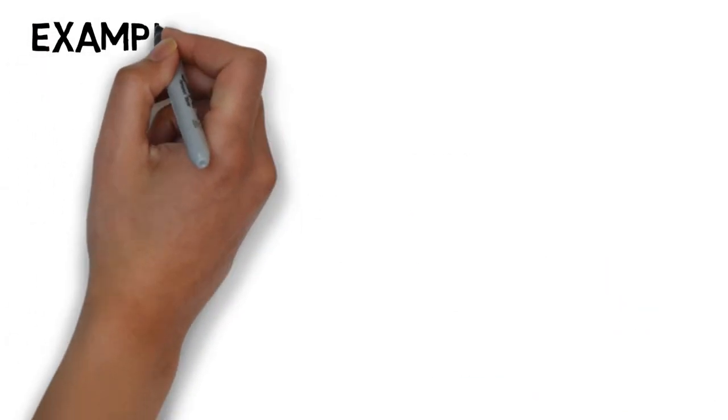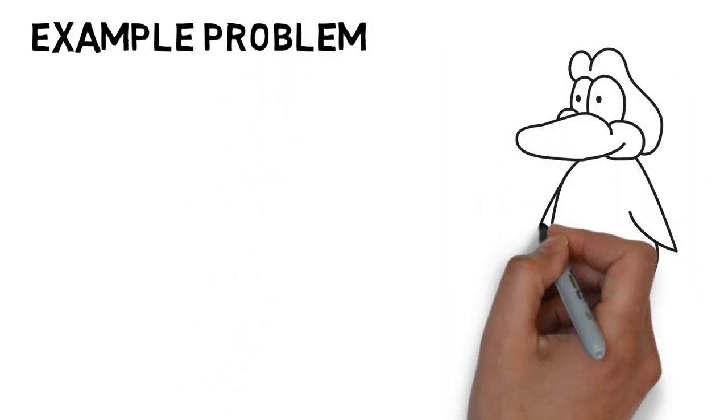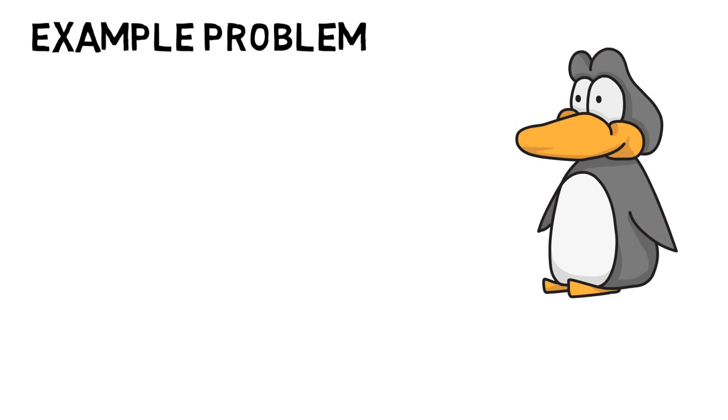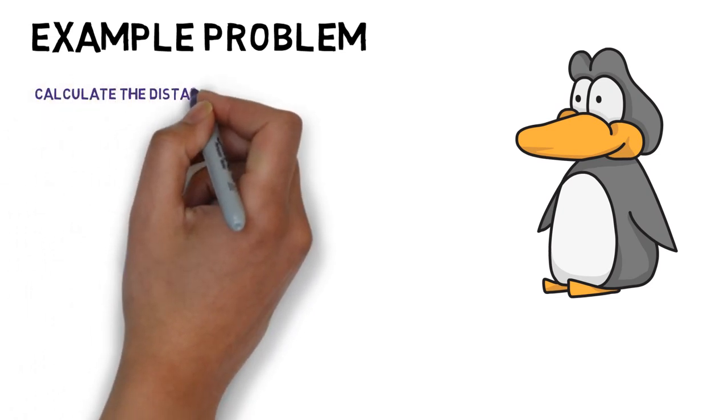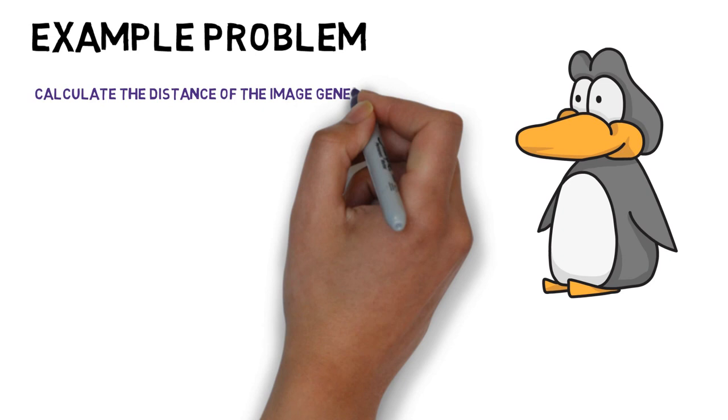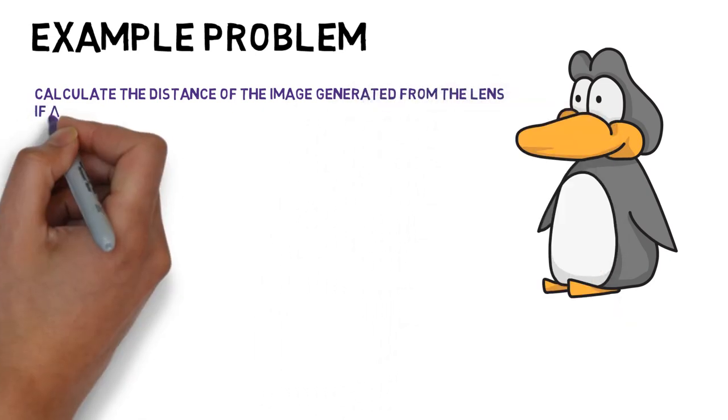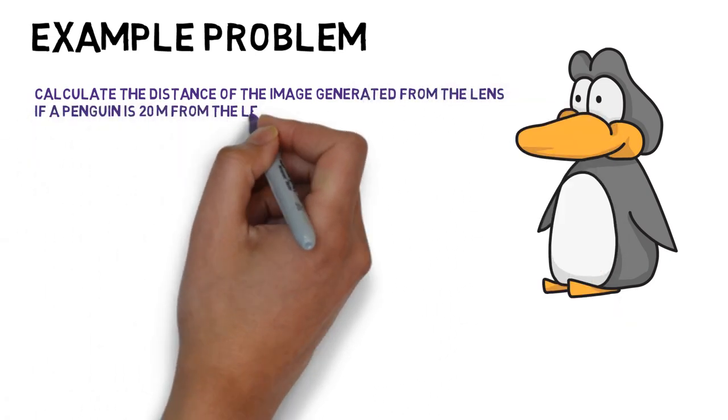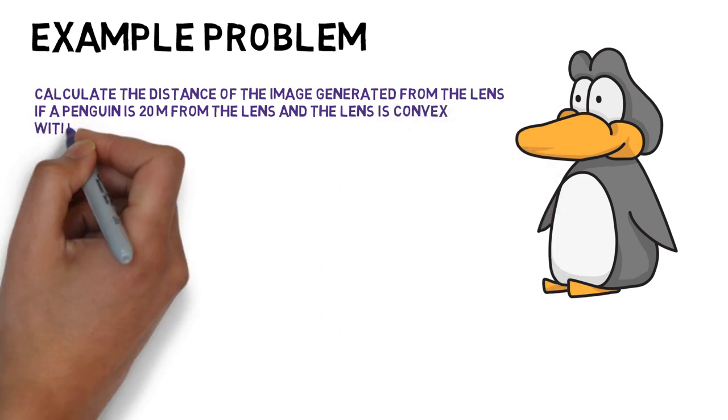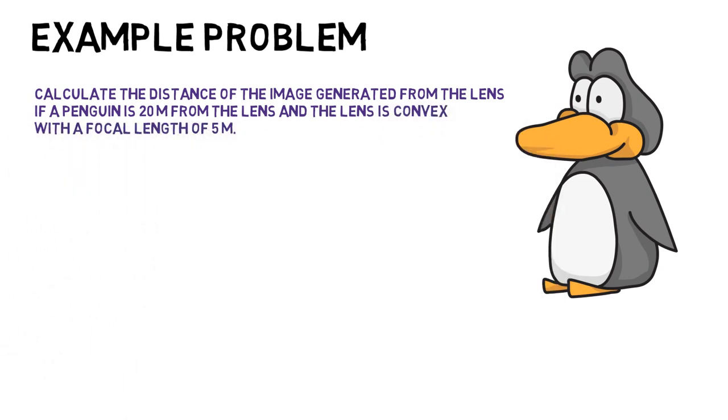Now that we know the equation, let's move on to an example problem. Calculate the distance of the image generated from the lens if a penguin is 20 meters from the lens, and the lens is convex with the focal length of 5 meters. So take a minute to figure out how we'd solve this problem, and also check out the penguin.